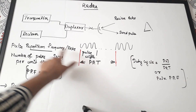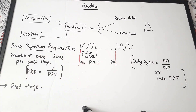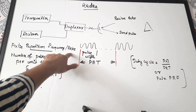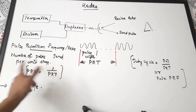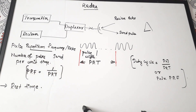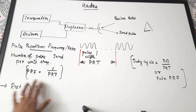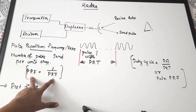One divided by PRT gives PRF — pulse repetition frequency, or pulse repetition rate. PRF is the number of pulses sent per unit time — how frequently pulses are being sent by the radar. To detect the presence of a target we require more than one pulse, so PRF equals 1 divided by PRT.